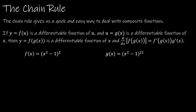Let's say y = f(u), where u is another function — a function within a function. To find the derivative of that composite function, we take f'(g(x)): the derivative of the original function times the derivative of the composite function. We write this as f'(u) times u'.